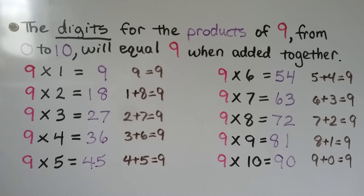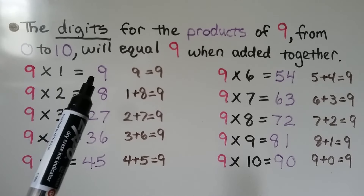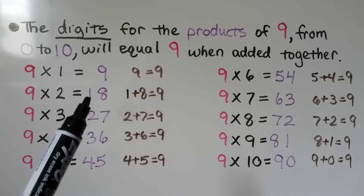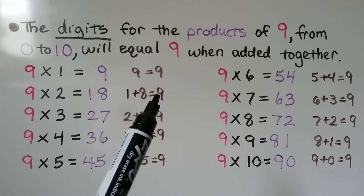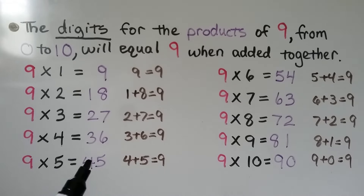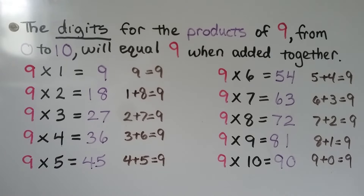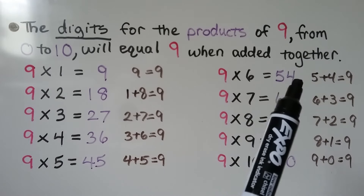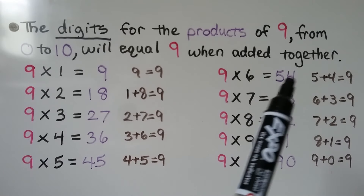There's another pattern: the digits of the product of 9 from 0 to 10 will equal 9 when added together. For example, 0+9=9, 1+8=9, 2+7=9, 3+6=9, 4+5=9, and this continues all the way to 9 times 10. So if you try 9 times 6 and write 53, you'll know it's wrong because 5+3 does not equal 9 — it must be 5 and 4.